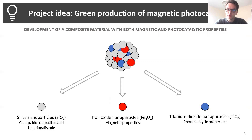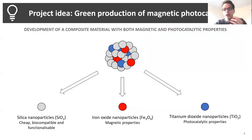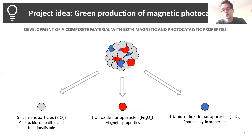By combining different elements such as silica, iron oxide, and titanium, it's possible to develop a material offering adsorption properties, responsive to a magnet, and offering photocatalytic properties — meaning it can absorb UV light or visible light in order to create highly reactive species, which help destroy synthetic dyes in solution.